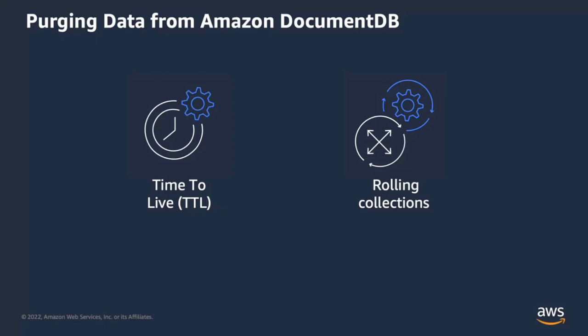Now let's talk about how to purge and delete data efficiently from DocumentDB. There are two options. You can use a TTL index — Time To Live — which allows you to set a timeout on each document. When a document reaches the TTL age limit, it is automatically deleted from the collection. It certainly simplifies the purge process, but TTL indexes result in an explicit delete operation, and document deletion incurs I/O, which is one of the pricing dimensions for DocumentDB. Workloads with high TTL deletes result in increased I/O usage, and if your workload is write-heavy, TTL deletes can be suboptimal from a cost and performance standpoint.